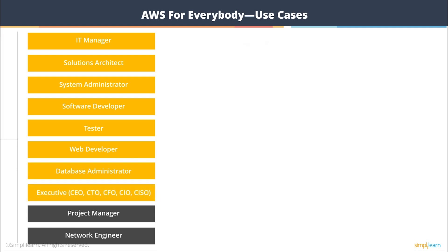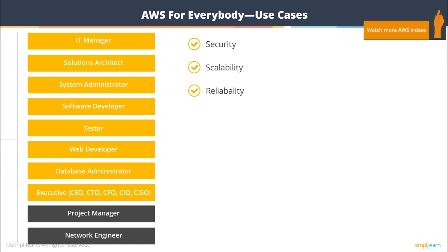As an executive — a CEO or CISO — you're concerned about security, scalability, and reliability. AWS gives you a host of services that integrate seamlessly into your enterprise's data center. It's not all cloud or no cloud at all. Through various storage and connectivity services, you can plug your data center into AWS and have data transfer happen seamlessly and securely.